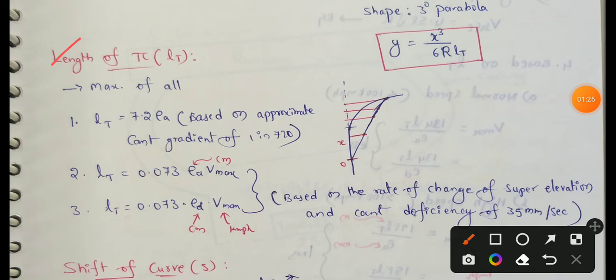Next, length of transition curve. LT equal to maximum of all. First one: LT length of transition curve equal to 7.2 into actual superelevation. This is based on approximate cant deficiency of 1 in 720.